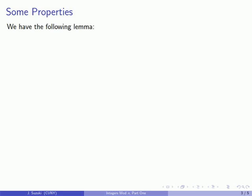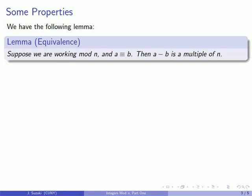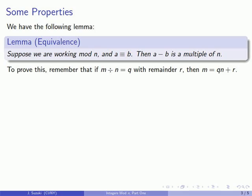Suppose I'm working mod n and I'm told that a is congruent to b. Then a minus b is going to be a multiple of n. To prove this it's useful to remember if I find m divided by n equal to q with remainder r, then I know that m is equal to qn plus r.